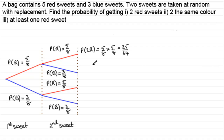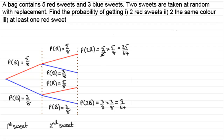If they asked us to work out the probability of two blues, then P(2B) would be three eighths times three eighths, which gives us a total of nine over 64. Now this is the answer to part one of our question — the probability of getting two reds. But when it comes to part two, the probability that the sweets are the same colour: